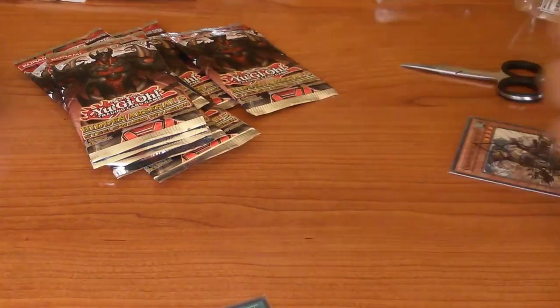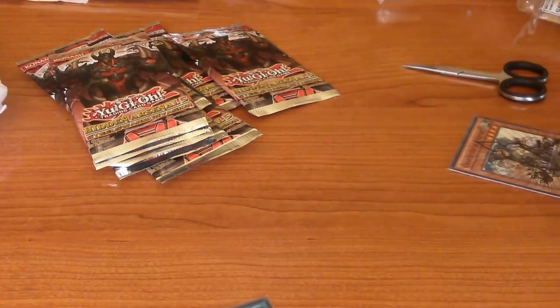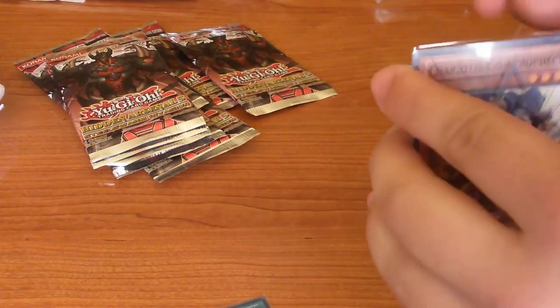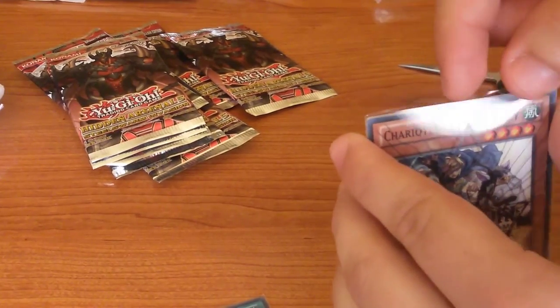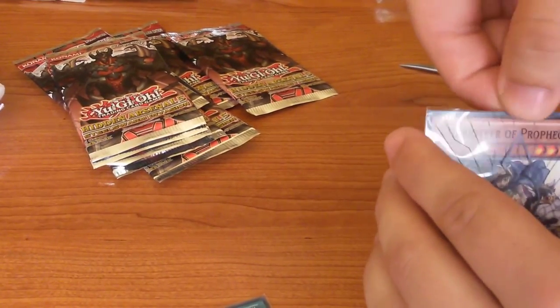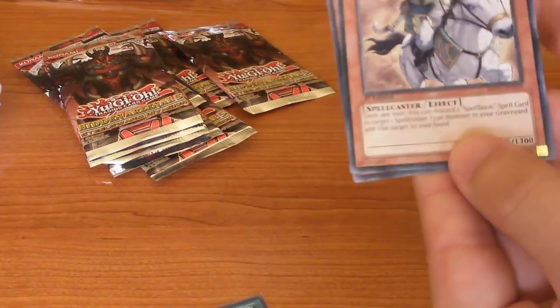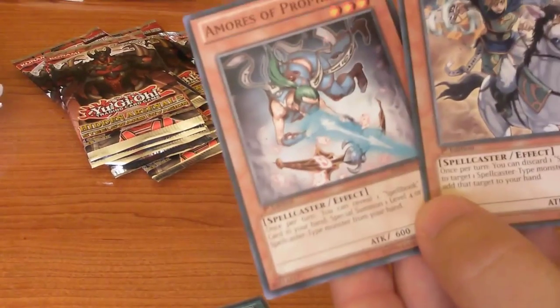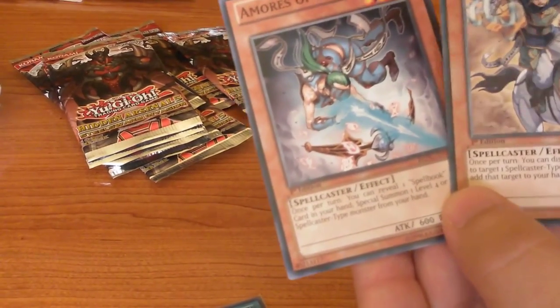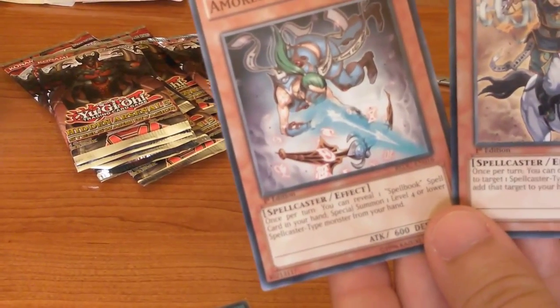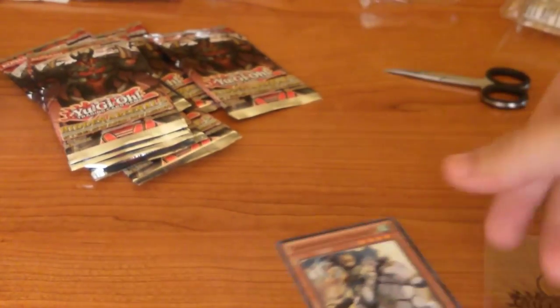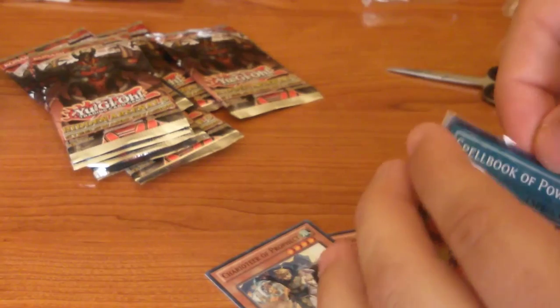Oh yeah, my bad. So Charioteer of Prophecy and Amores of Prophecy for my spell caster deck, and two Spell Books of Power. Neat.